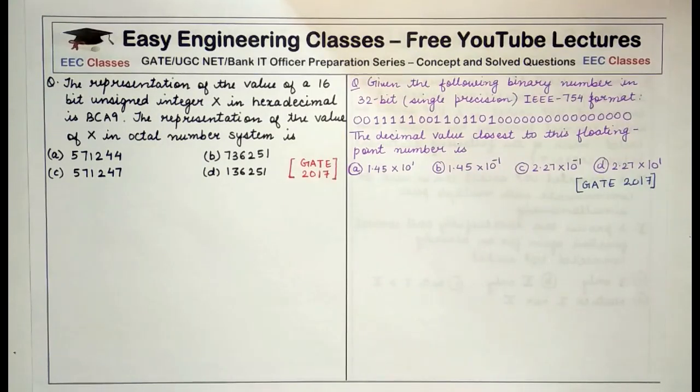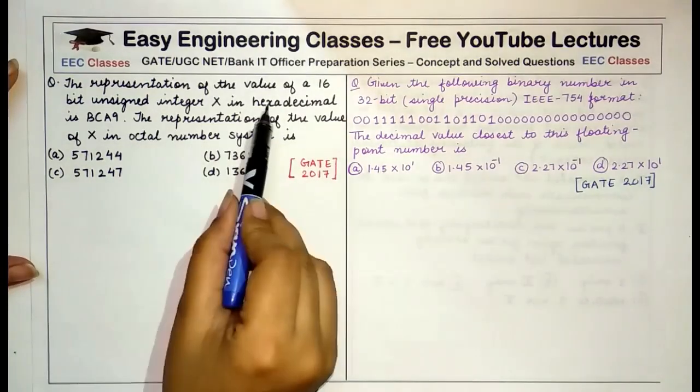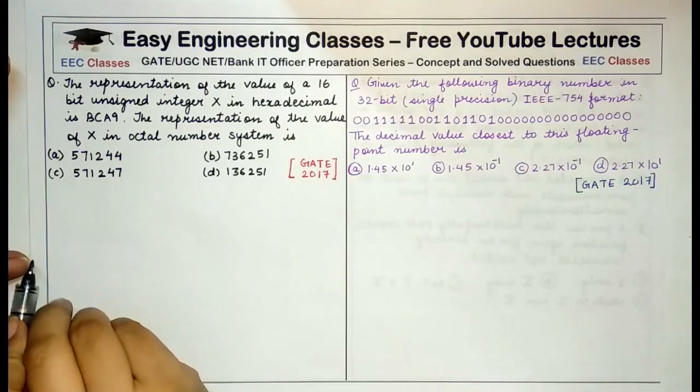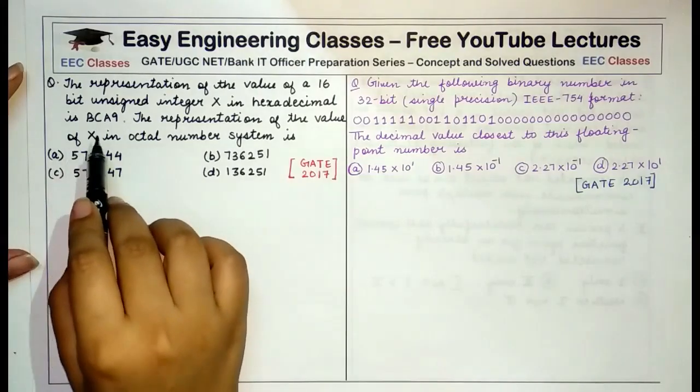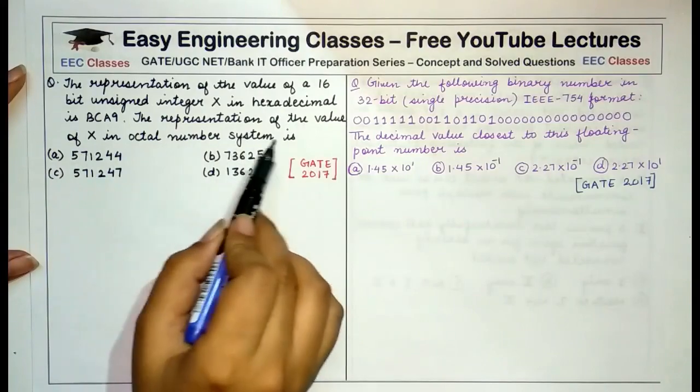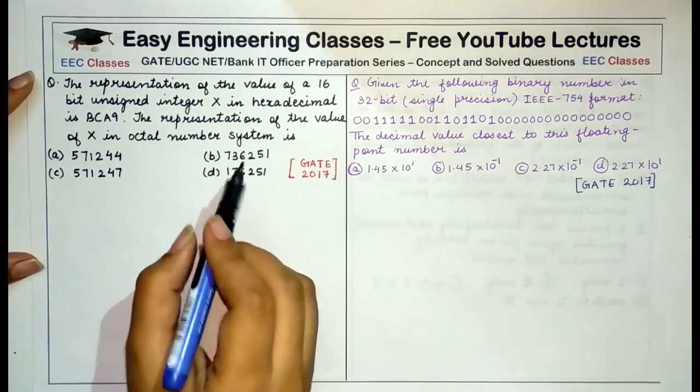Alright, so let's get started with our first question. In the first question it is given that the representation of the value of a 16-bit unsigned integer x in hexadecimal is BCA9, and we have to tell the representation of this value in octal number.